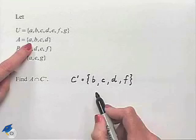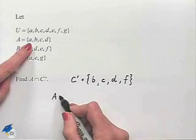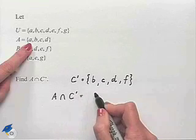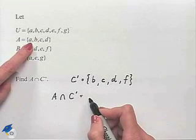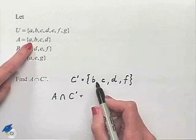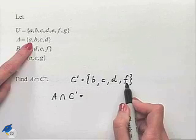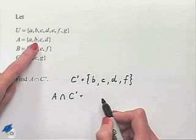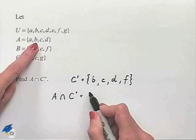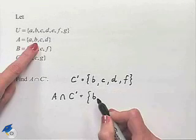A intersected with C complement is going to equal... well, set A has the element A in it, but that is not contained in C complement. Set A has the element B in it. That is contained in C complement, and for that reason it's part of the intersection.